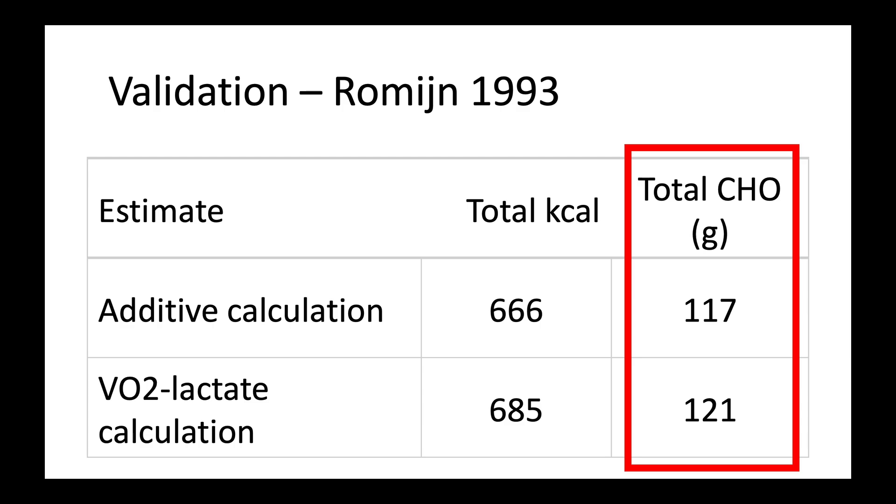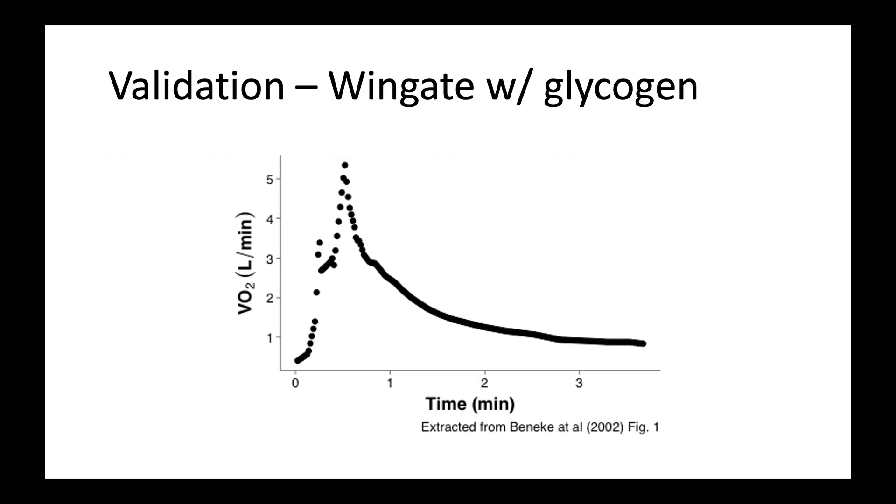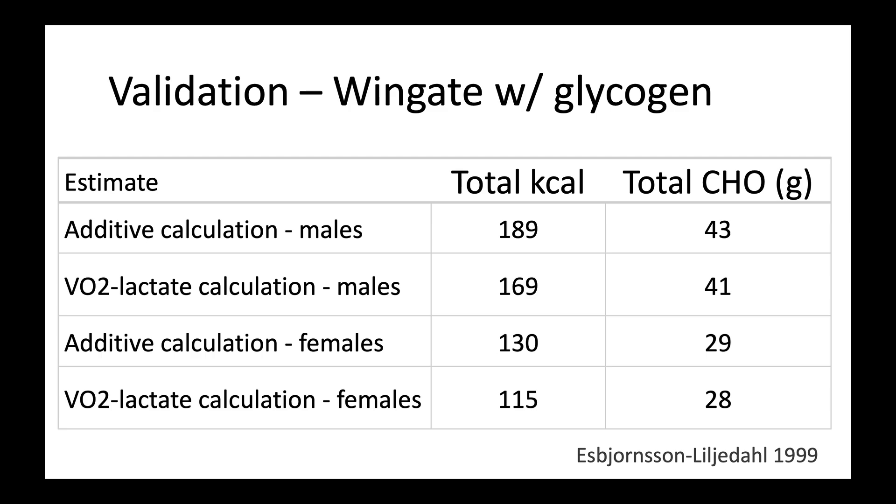I was also curious to compare this approach to a Wingate test. A Wingate test is a 30-second all-out sprint. As we saw earlier, people can deplete huge portions of the glycogen in just 30 seconds during these maximal efforts. So I extracted VO2 and lactate values from a published study, ran the numbers in a similar way, and compared that with the changes in muscle glycogen. By the way, the code and calculations for all of this are shown as a supplemental file within the published paper. And so, when we compare the two approaches for estimating carb use, the results are also spot on. Here we see data for males on the top rows, and females on the bottom rows.